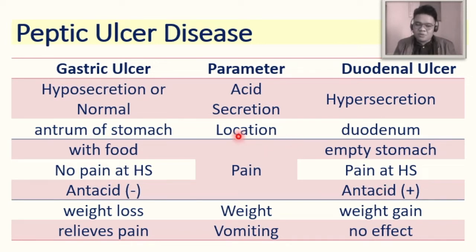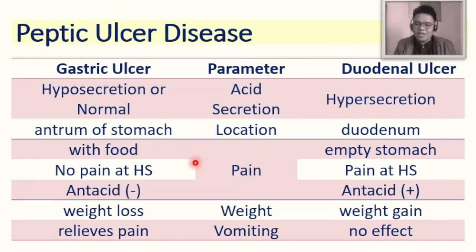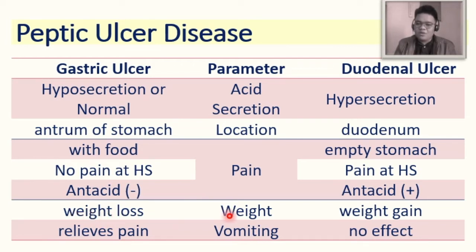For location, gastric ulcer is in the antrum of the stomach, while duodenal ulcer is in the duodenum, about 1.5 centimeters from the pylorus. In gastric ulcer, pain occurs with food, so patients tend to avoid eating, leading to weight loss. In duodenal ulcer, pain occurs on an empty stomach — food relieves the pain — hence patients tend to eat more, resulting in weight gain.